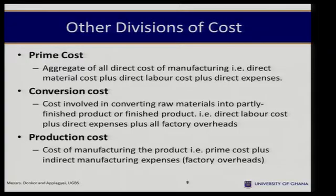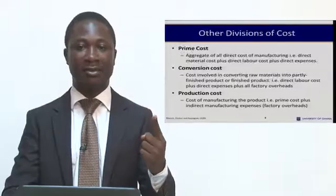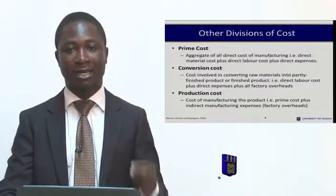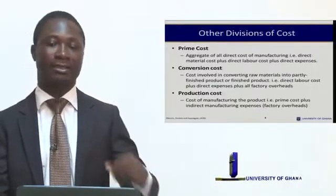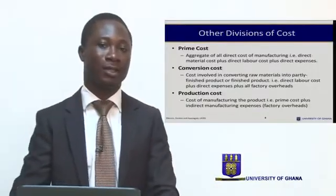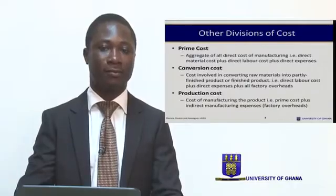When we talk about prime costs, we are referring to an aggregate of all the direct costs for a manufacturing organization. So, summing up direct material, direct labor, and direct expense gives us the prime cost for the organization.